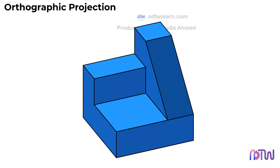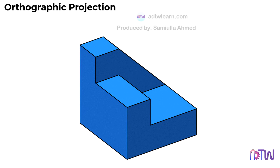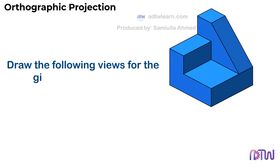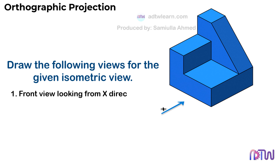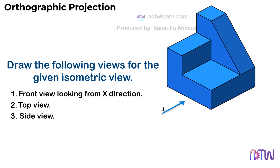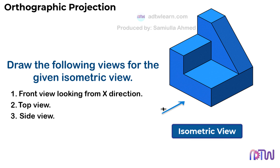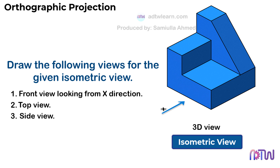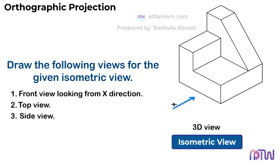Consider this figure. Instructions are as follows: draw the following views for the given isometric view — front view looking from x direction, top view, and side view. This given view of the object is called the isometric view. Here we can see the object drawn in a three-dimensional view, and from this we have to draw a two-dimensional view of the object.